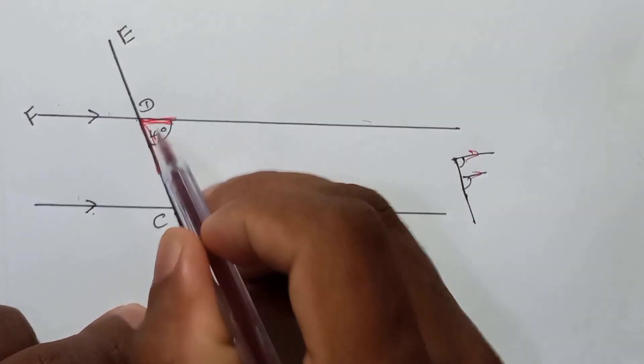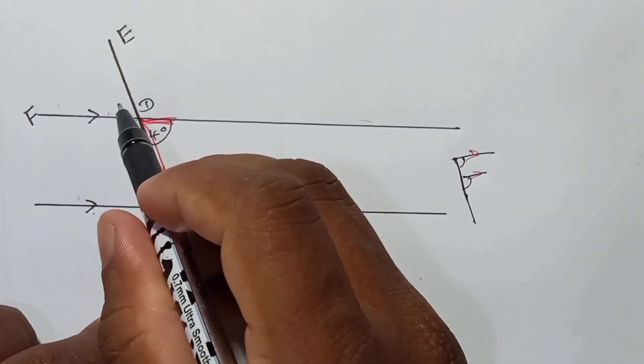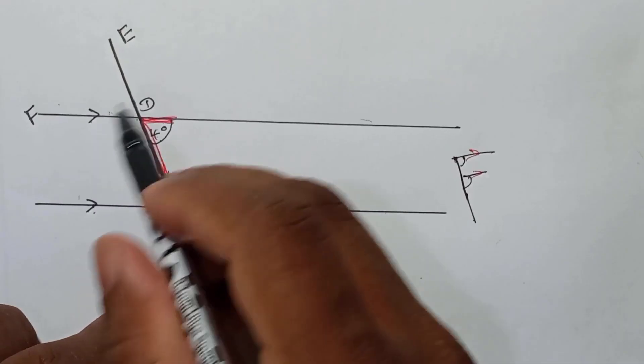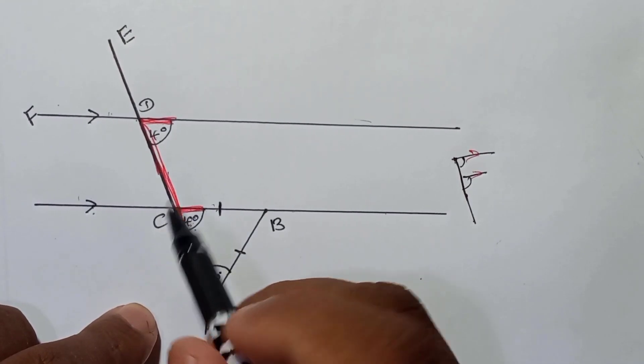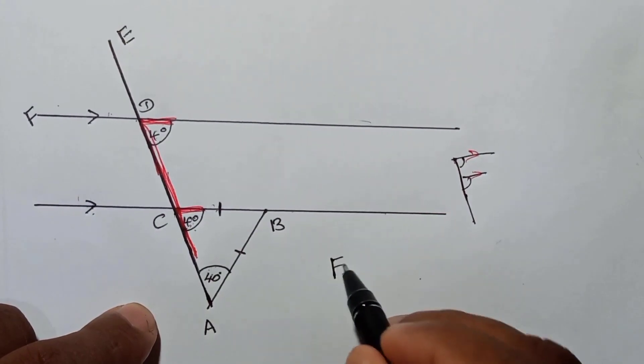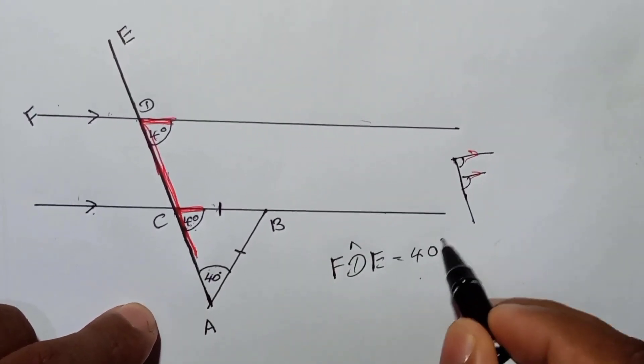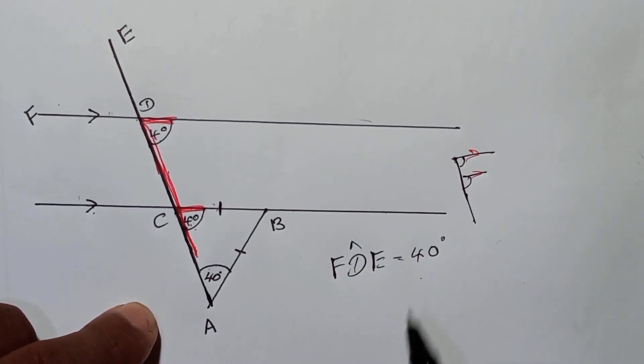So that's why if this is 40, this is also 40. You can tell this very easily by the vertically opposite angle. So that's why here you can tell the FDE angle is equal to 40 degrees. That's the answer for FDE.